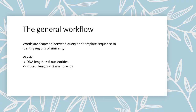The word — two amino acids for proteins or six nucleotides for DNA — is searched between the two sequences. One sequence is the query sequence and the other is the template sequence. After searching the words, we align the region. This is the general workflow of FASTA.